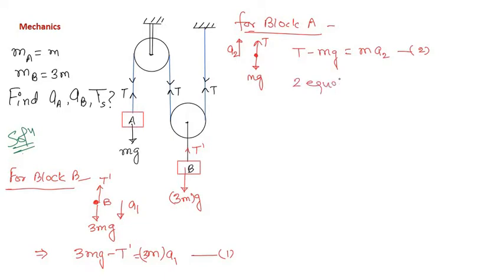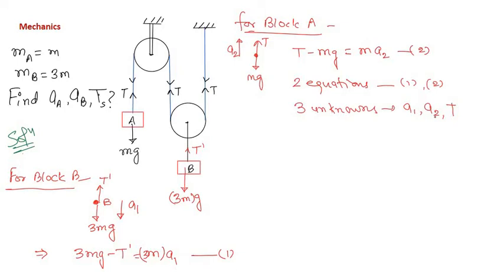We now have two equations but three unknowns: a1, a2, and T. We also have T' as an additional unknown. With n unknowns we need n equations, so we need one more constraint relation that relates a1, a2, T, and T' to each other.